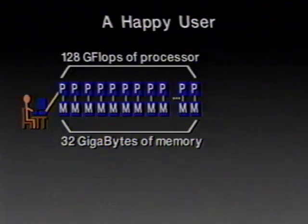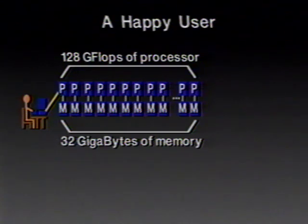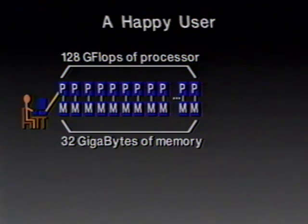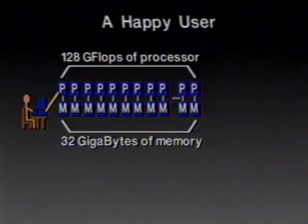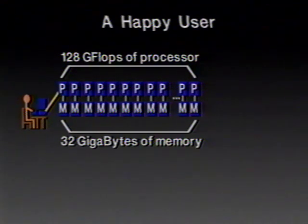So we're going to fix that. We're going to add processing power to the computer system to match the memory — say 128 gigaflops of processing power. I've made a decision here that I need to justify later: I've shown the memory as having been divided up into pieces, so that I put a processor on each piece of memory. We've divided the memory up into lots of chunks, still got the same 32 gigabytes, and we've got a bunch of processors. Now instead of having one von Neumann bottleneck, we've got a whole lot of them — but at least we've made the bottleneck a lot wider.